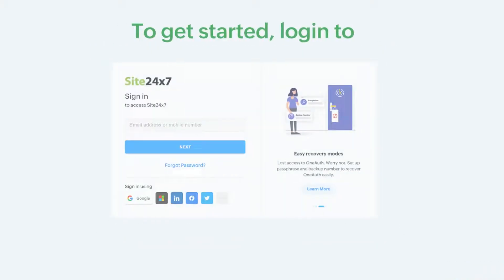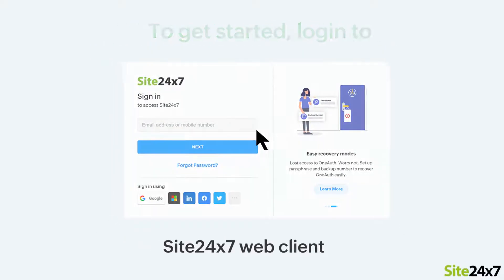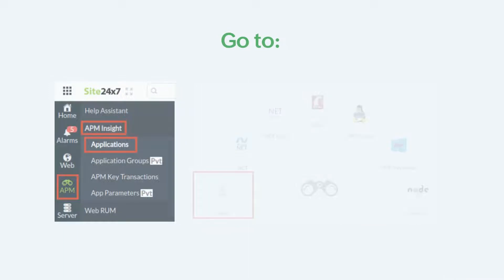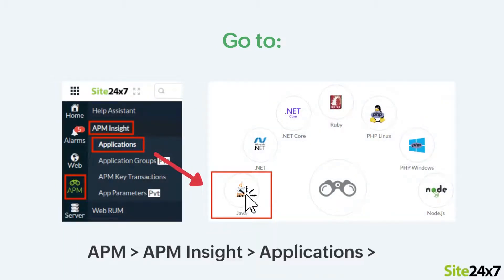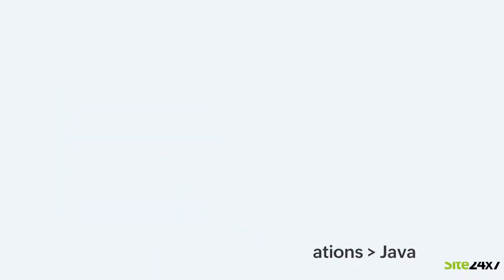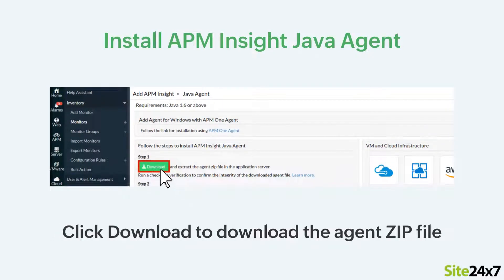To get started, login to the Site247 web client. Now go to APM, APM Insight, Applications and click the Java icon. Then click Download to download the APM Insight Java agent zip file.